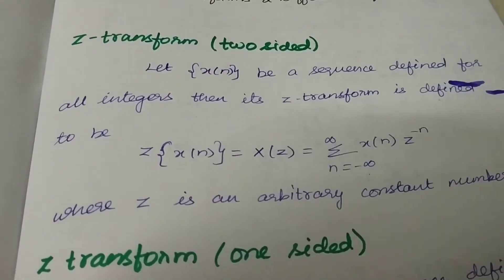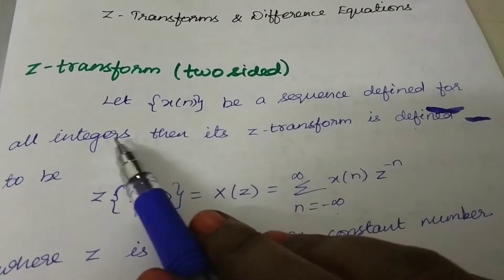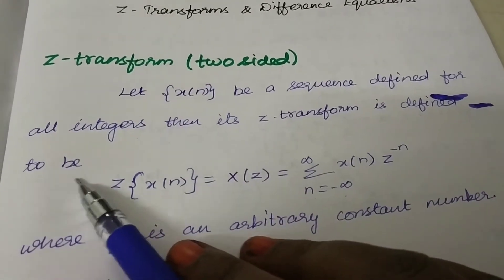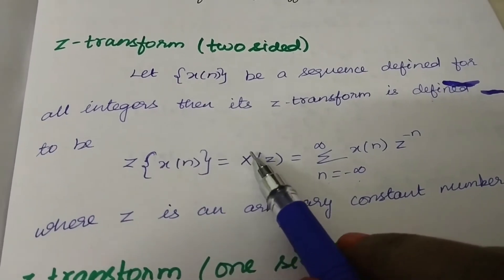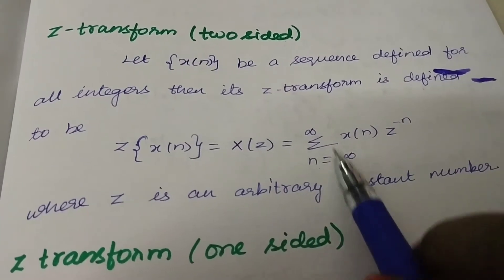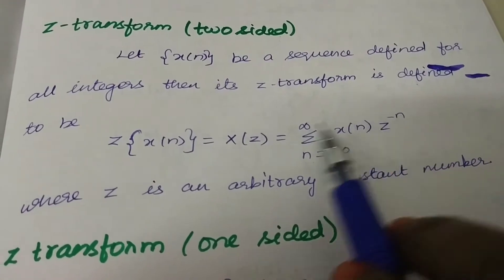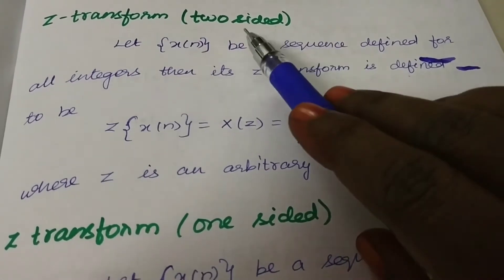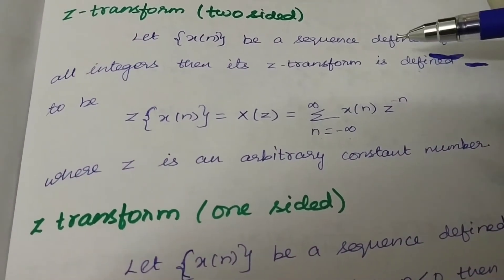Let x(n) be a sequence defined for all integers. Then its Z-transform is defined to be: Z of x(n), written as capital X(Z), equal to the summation over n equal to minus infinity to plus infinity of x(n) into Z raised to the power minus n, where Z is an arbitrary complex number. This is the 2-sided form, with limits from minus infinity to plus infinity.